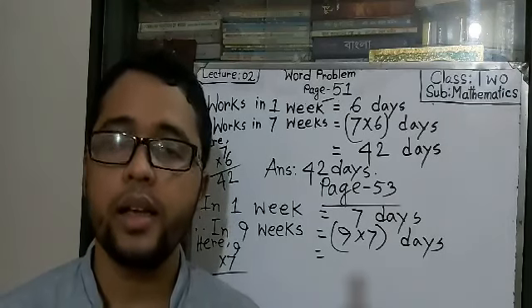Now count times table of 7. 7 ones are 7, 7 twos are 14, 7 threes are 21, 7 fours are 28, 7 fives are 35, 7 sixes are 42, 7 sevens are 49, 7 eights are 56, 7 nines are 63.